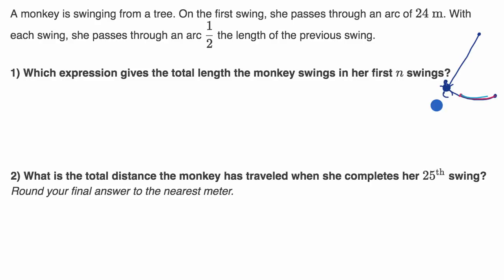So let's look at the first choice. Which expression gives the total length the monkey swings in her first N swings? So pause the video and see if you can do that. And you can express it as, actually express it both two ways. Express it as a geometric series, but also express it as the sum of a geometric series, if we were to actually evaluate it.